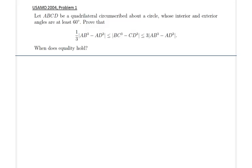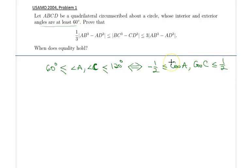What we are given is that the interior and exterior angles are at least 60 degrees. So because both should be satisfied at the same time, I will focus on two of these angles, particularly A and C, angle A and C. Therefore, the given condition tells us that angle A and angle C are between 60 degrees and 120 degrees. That would be equivalent of saying that if we just apply the cosine of this inequality, we get that minus one-half is less than or equal to cosine A or cosine C, which is less than or equal to one-half. Remember, cosine 60 is one-half and cosine 120 is minus one-half.